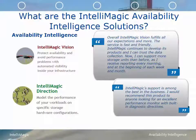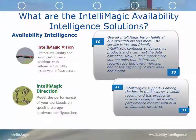What are the Intellimagic Availability Intelligence Solutions? Intellimagic Vision is our flagship product. It comes in several flavors for different product support — ZOS, ZOS disk, ZOS tape, and SAN — and its goal is to protect availability and avoid performance problems with automated visibility inside your storage infrastructure. Intellimagic Direction is designed to model the performance of your workloads on specific storage hardware configurations.